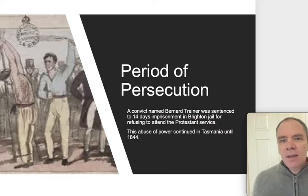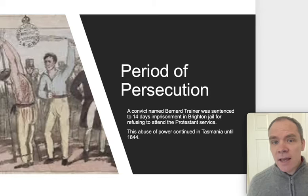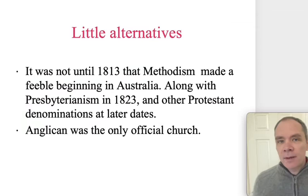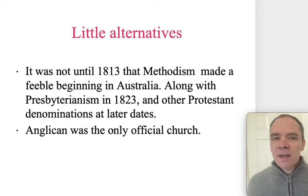During the period of persecution, a convict named Bernard Traynor was sentenced to 14 days imprisonment in Brighton jail for refusing to attend a Protestant service. This abuse of power continued in Tasmania until 1844. It was not until 1813 that Methodism made a feeble beginning in Australia, along with Presbyterianism in 1823 and other Protestant churches at later dates. The Church of England was the official church.